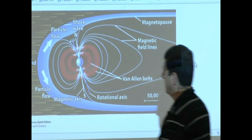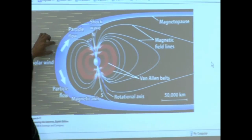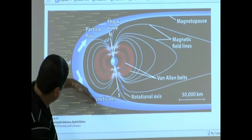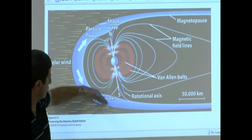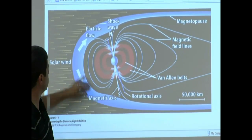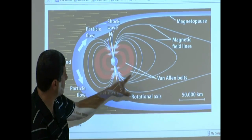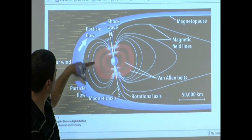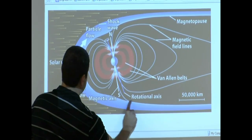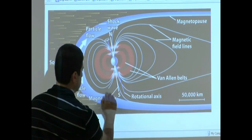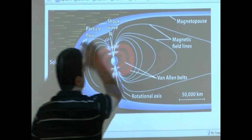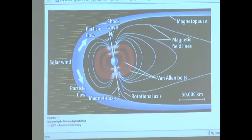Looking at another picture: the solar wind comes, and a lot of it — besides getting trapped — gets redirected down a path instead of hitting the Earth. So it's acting like a shield. These regions are called the Van Allen belts, which trap the charged particles. In this diagram, the blue one is the rotational axis and the white one is the magnetic axis — they're pretty close to each other. The magnetic field lines and the whole structure are known as the magnetopause.